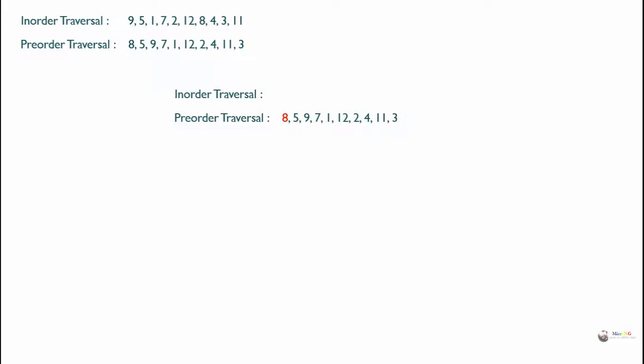We can see that 8 is in the in-order traversal. All the elements which are on the left of 8 in in-order traversal will become the left subtree, which is 9, 5, 1, 7, 2, and 12. Similarly, all elements on the right side of 8 in in-order traversal, which is 4, 3, and 11, will become the right subtree.